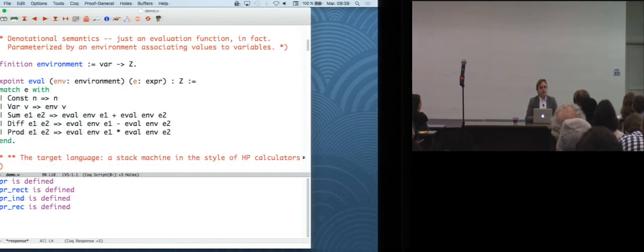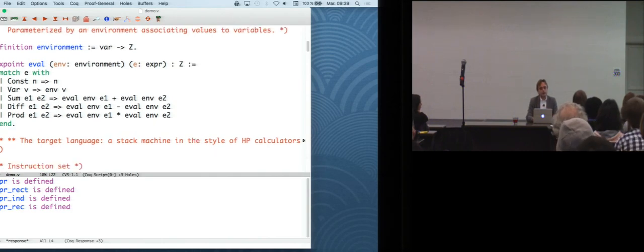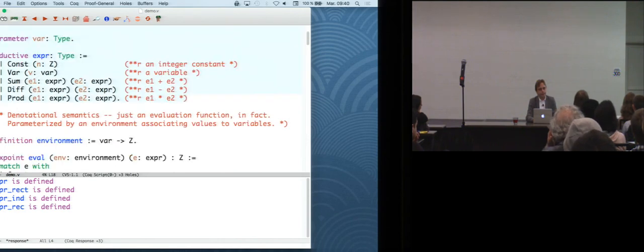And for the semantics, we are going to give what is called a denotational semantics. But that's really just an evaluation function. OK, so given an expression e and an environment that associates values to variables, so integer values to variable names, we are going to explain what value, what integer the expression evaluates to. So that's a simple function definition that proceeds by case analysis on the expression. If it's a constant n, the value is n. If it's a variable v, then the value is whatever you find in the environment associated with v. And if it's a sum, a difference, or a product, well, you recursively evaluate the sub-expressions and combine them with plus, minus, or times. So that's pretty easy.